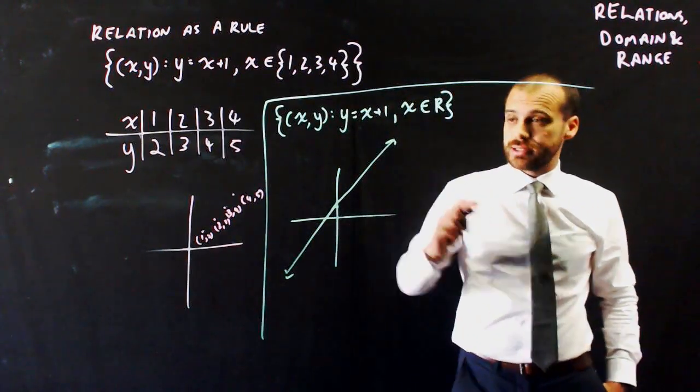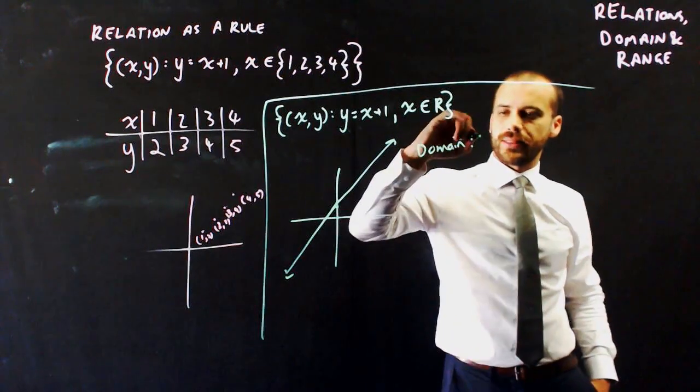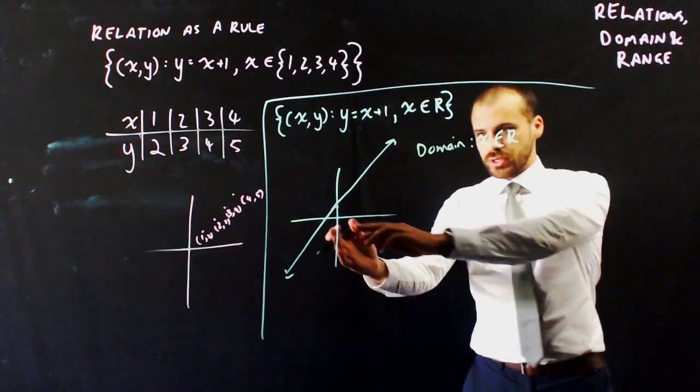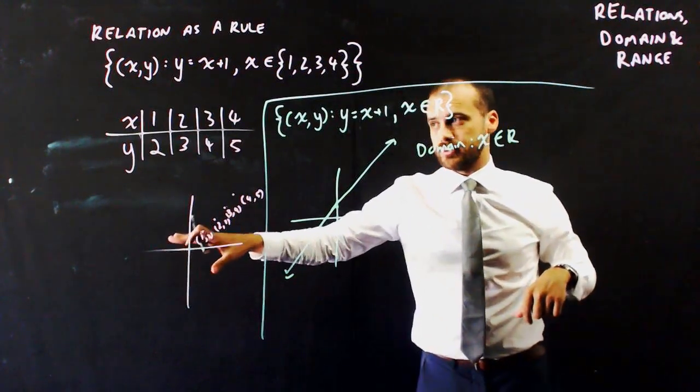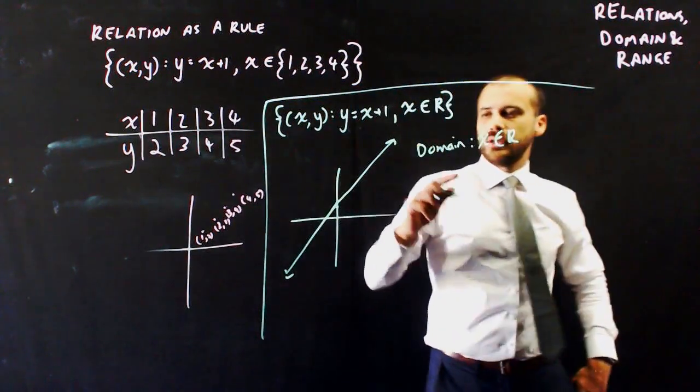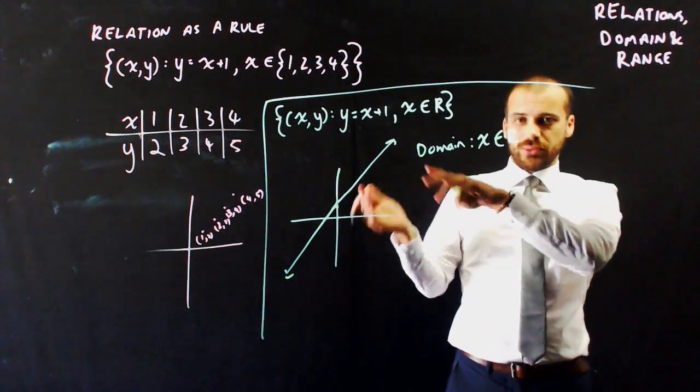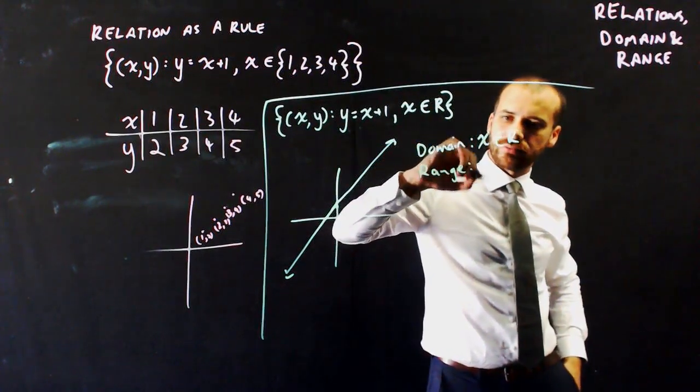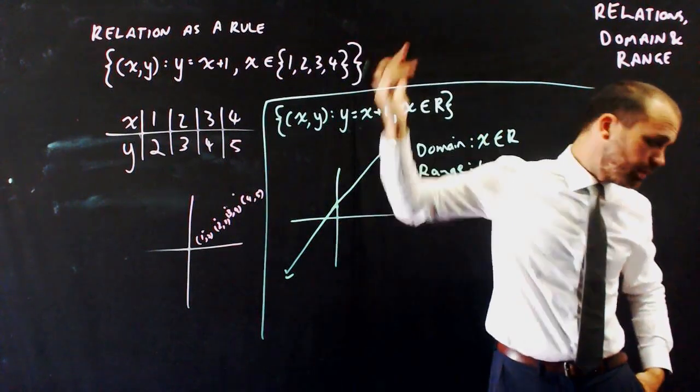Now, in this case, the domain is x is all the real numbers. Because it goes on forever that way and it goes on forever that way, whereas the domain for this specific case was 1, 2, 3, 4. Important to note, that includes all decimals as well, 1.001, 1.002, so the range, y is all the real numbers. Because y can go all the way up and y can go all the way down.